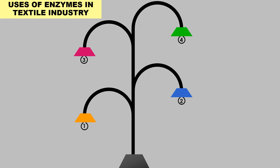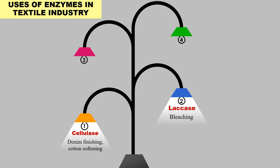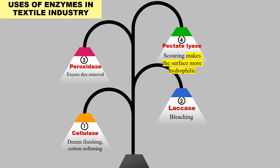The next application of enzymes is in the textile industry. Cellulase is used in denim finishing and cotton softening. Laccase is used in the bleaching process. Peroxidase is used to remove excess dyes from fabric. And pectinase is used in the scouring process, by which the surface is made more hydrophilic.